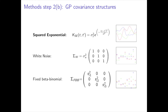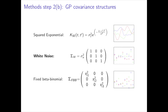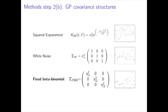The first one is the squared exponential covariance function, which captures the temporal structure by its two parameters: sigma squared f, the variance, and l, the length scale. Secondly, we have used white noise to model the random noise, and this covariance function has only one parameter, sigma squared n, the variance. Finally, we have included the posterior variances at each time point by using the fixed beta-binomial covariance matrix.